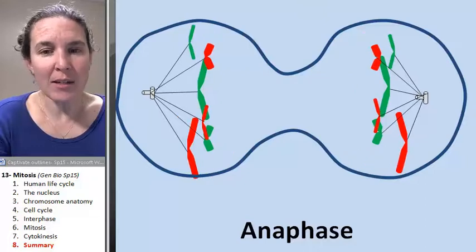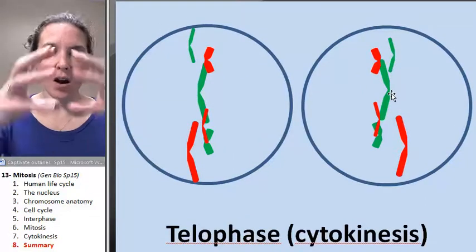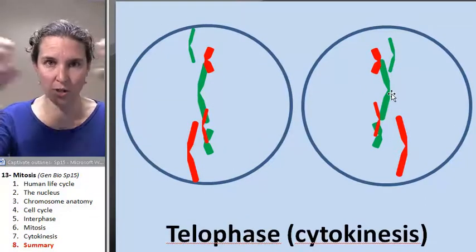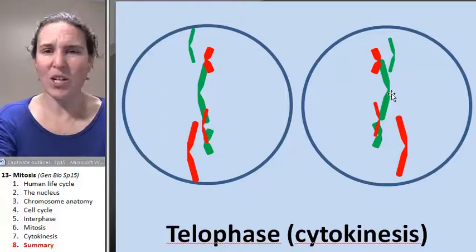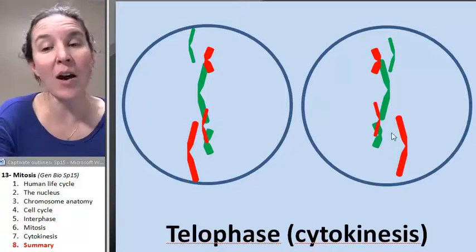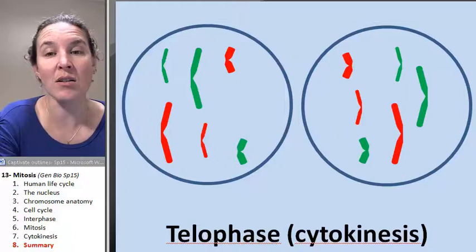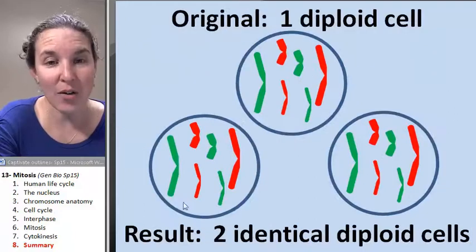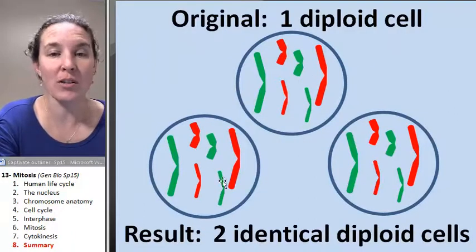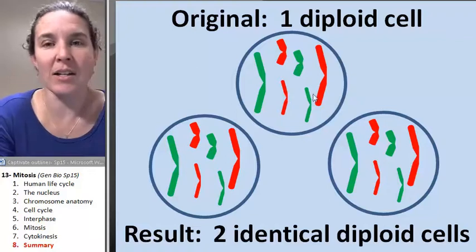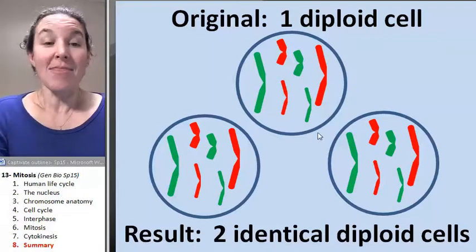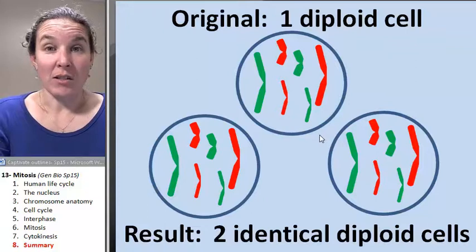Telophase happens when we get our chromosomes in the poles. We just finished cytokinesis. So now we have two identical daughter cells. And if we compare those two daughter cells to our original cell, you'll see that they're exactly the same.